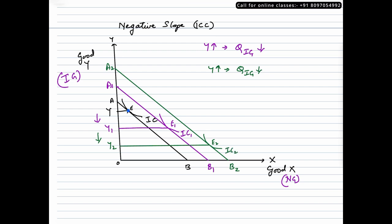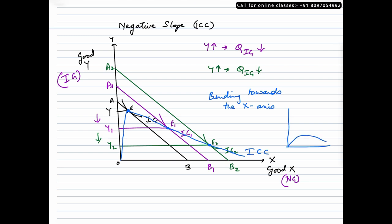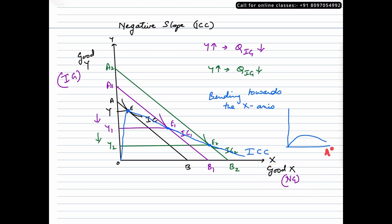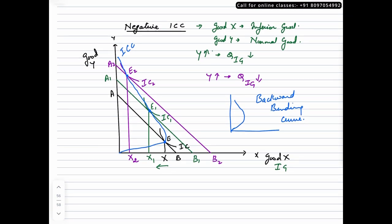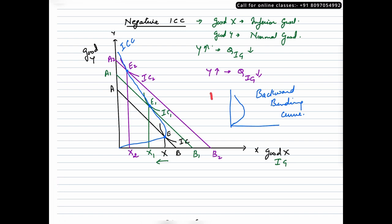Joining all these equilibrium points, the ICC curve bends towards the X axis — this is how it looks when the commodity on the Y axis is an inferior good. If we pay close attention, the ICC curve always bends towards the normal good. In the case where Y was inferior, the normal good was on the X axis, so it bent towards X. In the earlier case where X was inferior, the normal good was on the Y axis, so it bent towards Y.